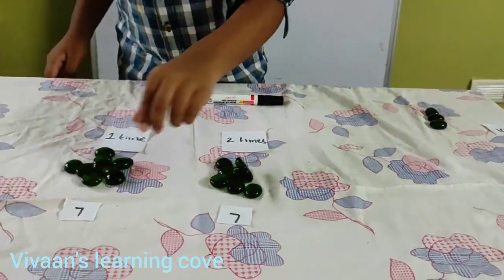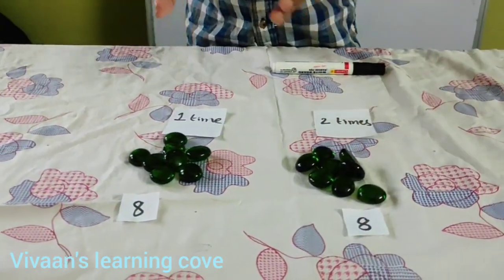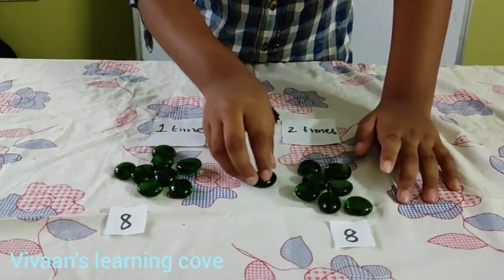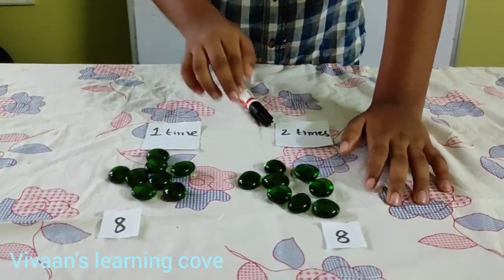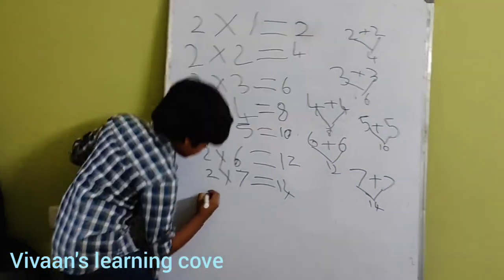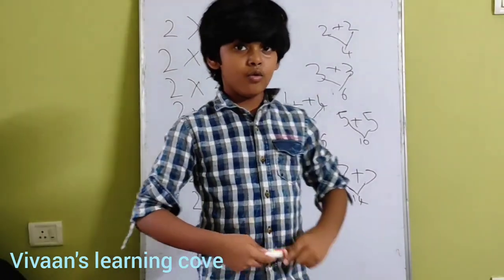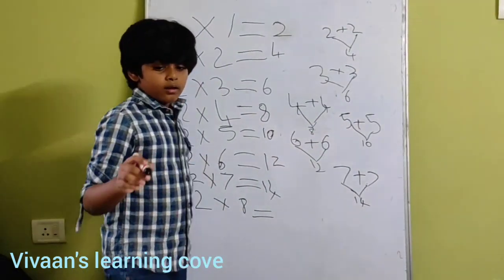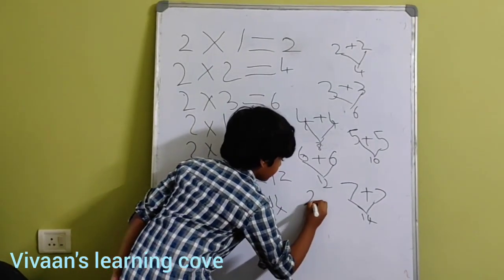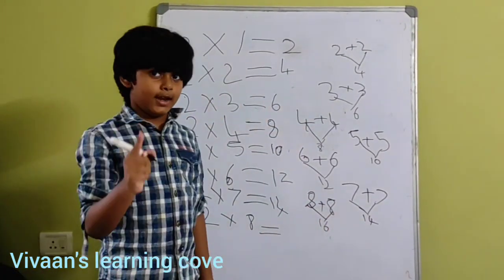Now I am going to take 8 pebbles 1 time and 8 pebbles 2 times. Let us count: 8 here, 8 here — so 9, 10, 11, 12, 13, 14, 15, 16. There are 16 pebbles. These cards mean 2 times 8. We write it as: 2 times 8 equal to 16. We should write it as 8 plus 8 equal to 16.